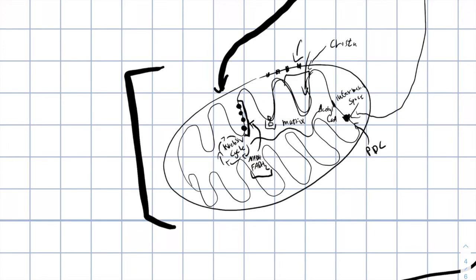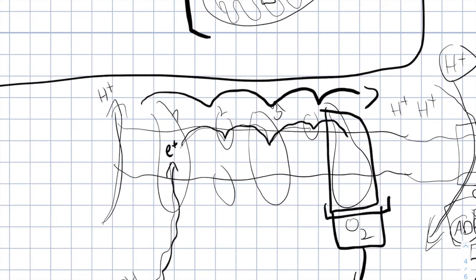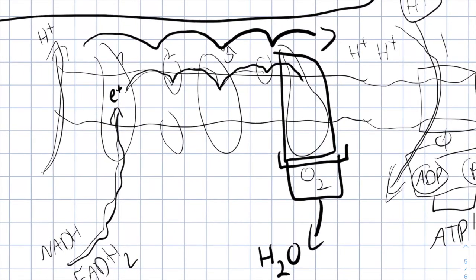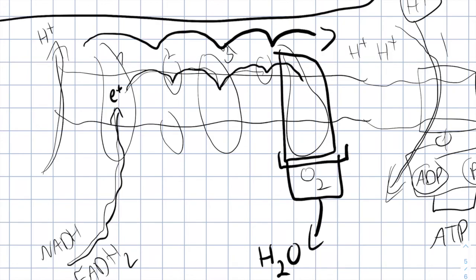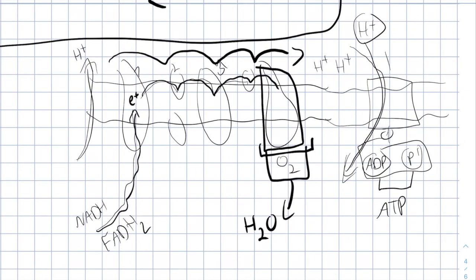The Krebs cycle creates NADH and FADH2, which are electron carriers. The electrons, using the electron carriers, go through the electron transport chain and their potential energy is used in order to pump protons from the matrix to the intermembrane space.